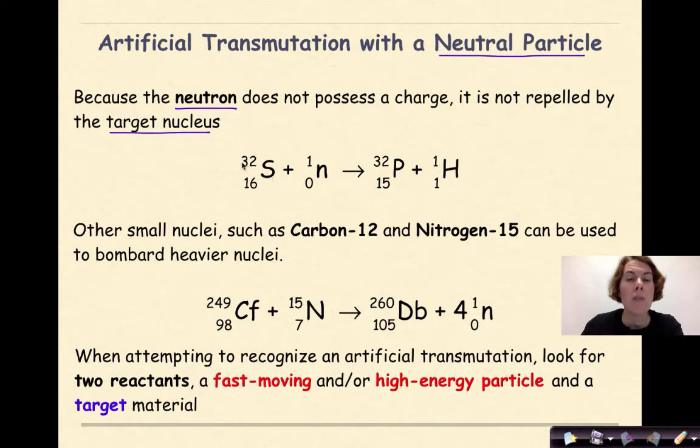Now let's talk about artificial transmutation with a neutral particle. Because the neutron does not possess a charge, it is not repelled by the target nucleus. So here we have sulfur-32 being bombarded by a neutron to produce phosphorus-32 and a proton. Other small nuclei such as carbon-12 and nitrogen-15 can also be used to bombard heavier nuclei.